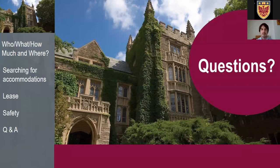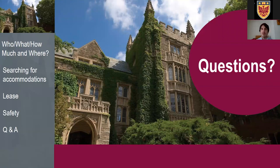Q: Is it typical for Canadian student houses to have five or six rooms with only one bathroom? Yes — student houses are essentially family homes now occupied by students, and it's not uncommon for families of four or five to share one bathroom. If having a private bathroom is essential, the only way to guarantee that is to rent a one-bedroom or studio apartment on your own.